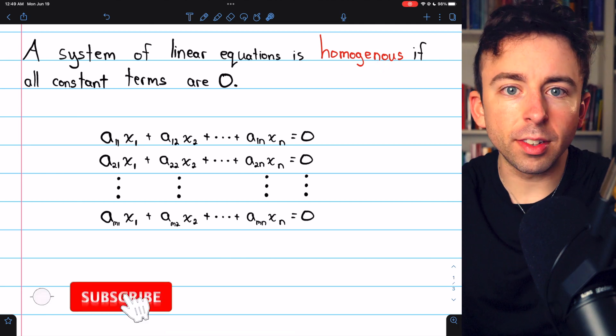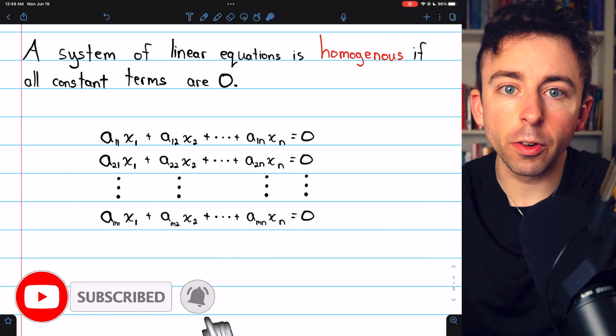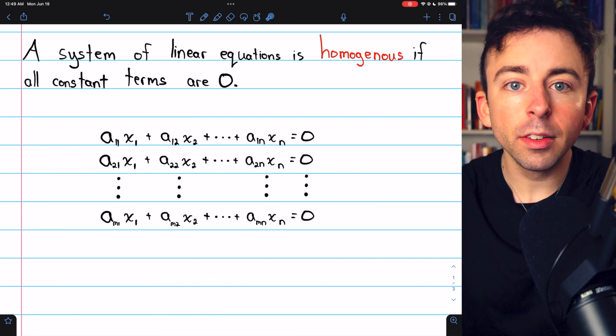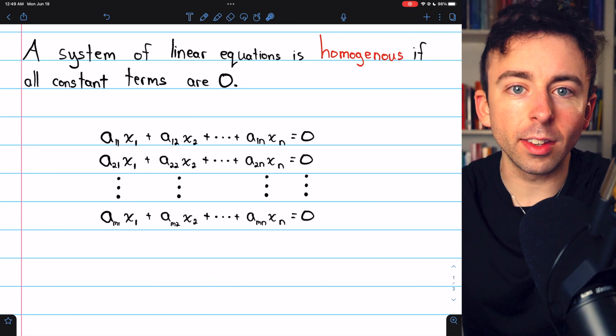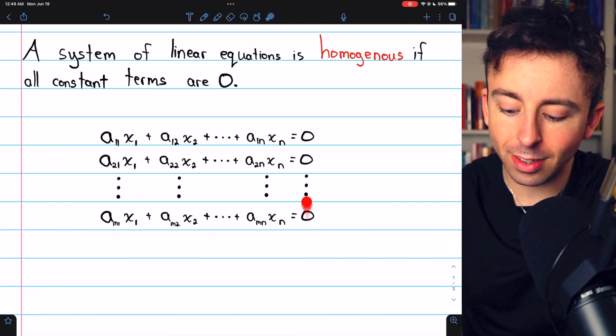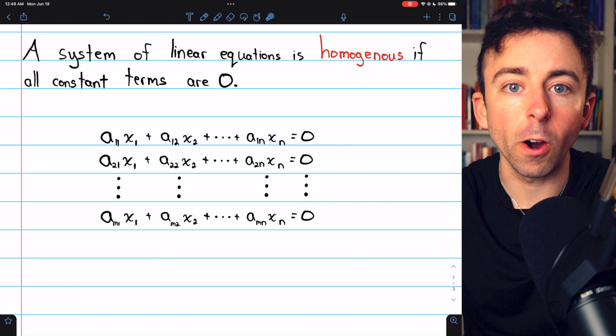A homogeneous linear system is a special type of linear system where all the constant terms are zero. So a linear system of equations is homogeneous if it looks like this. You can see on the right side, all of the constants are zero.